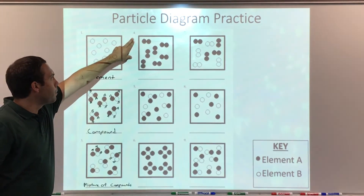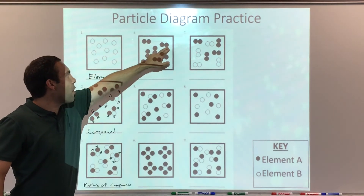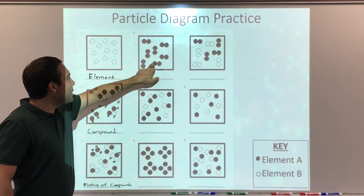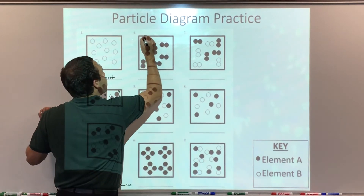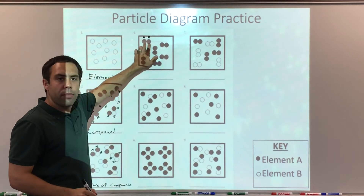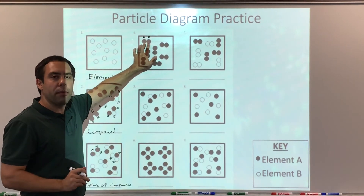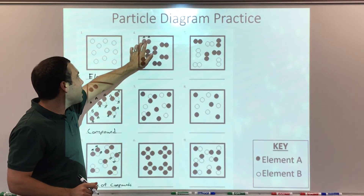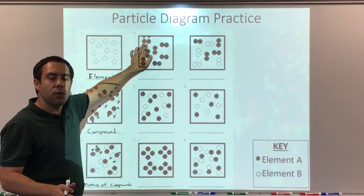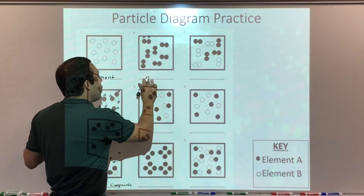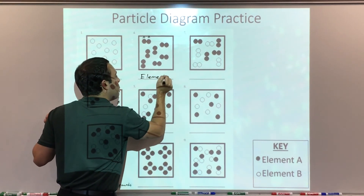Problem number four — we have two shaded circles together, repeated seven different times. I have two A's chemically combined. Remember, a compound is two or more different elements chemically combined in fixed proportion. Since these are two of the same elements, these are the diatomic elements. So for problem number four, we say they're all the same element.